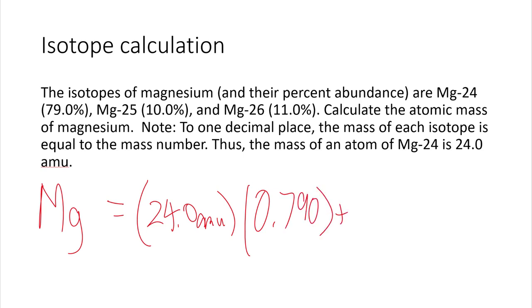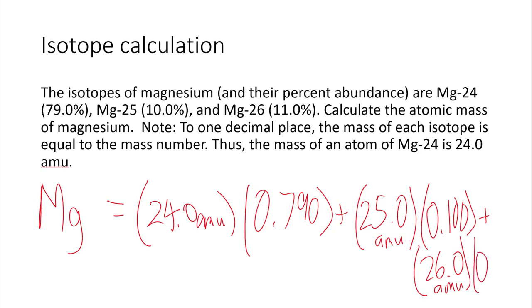And then you multiply that times magnesium-25, which is 25.0 atomic mass units times 10%, which is 0.100 plus magnesium-26, which is 26.0 AMUs times 0.110. And now you do the math on that.